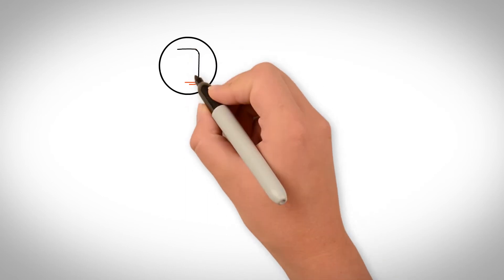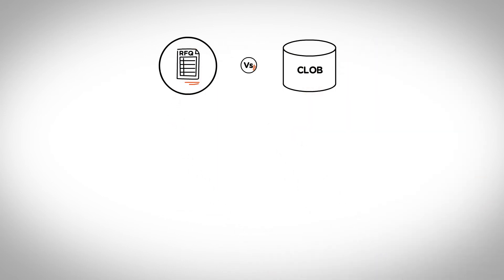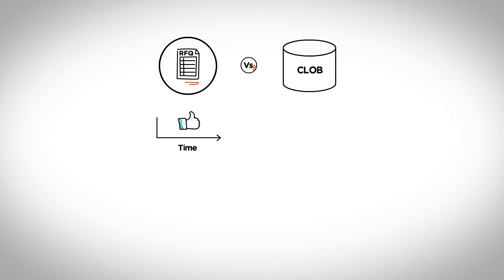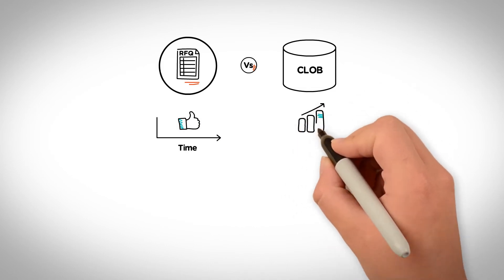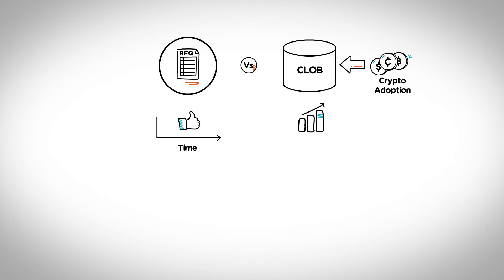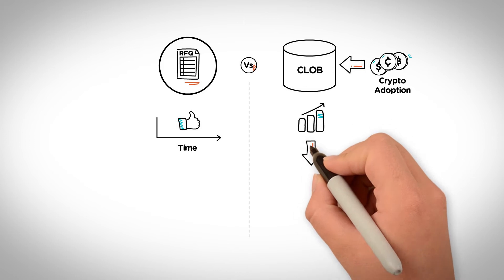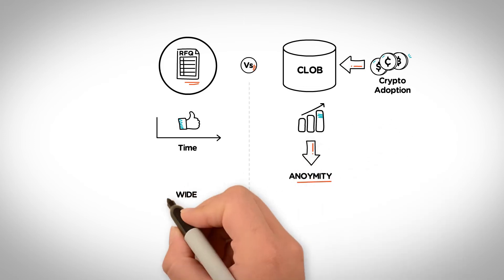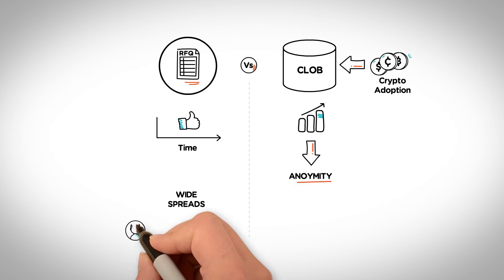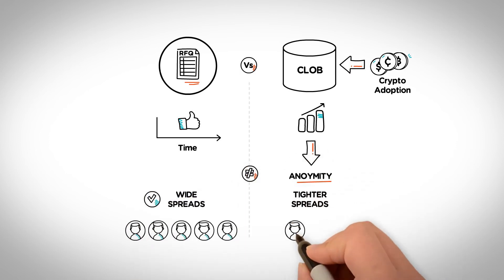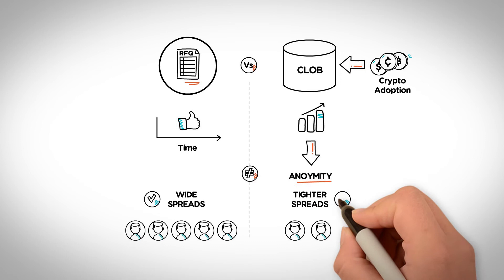RFQ execution is popular and will remain popular for some time, but growth in CLOB execution will result from mass crypto adoption, which we are starting to see early signs of occurring. CLOB allows true, all-to-all execution because it offers anonymity. In markets where spreads are wide, the RFQ model is likely to be preferred. In markets with tighter spreads, the CLOB may be preferred.